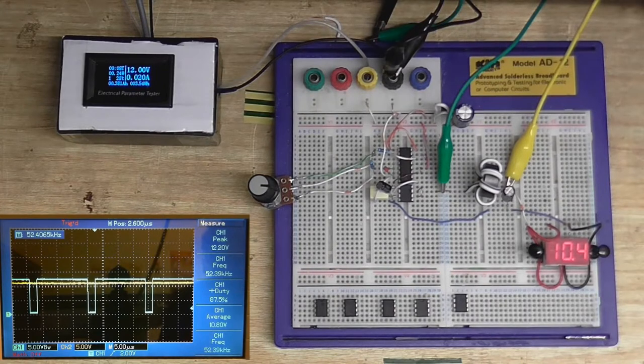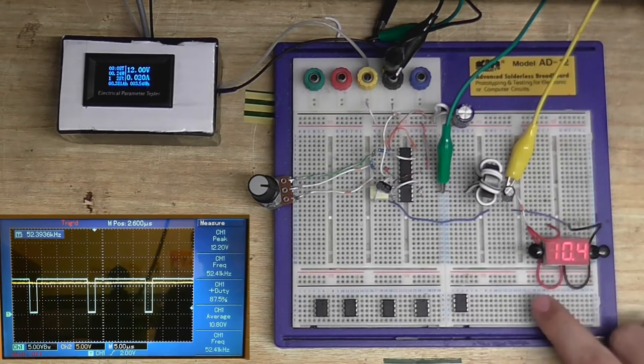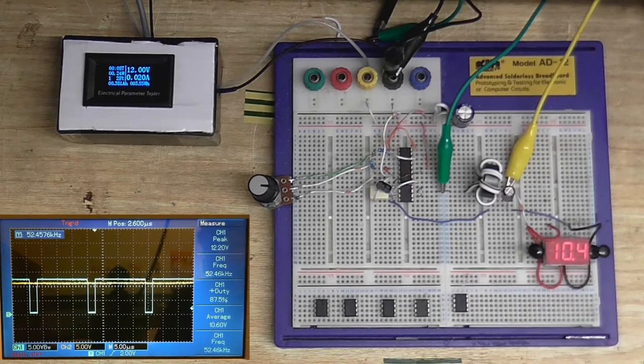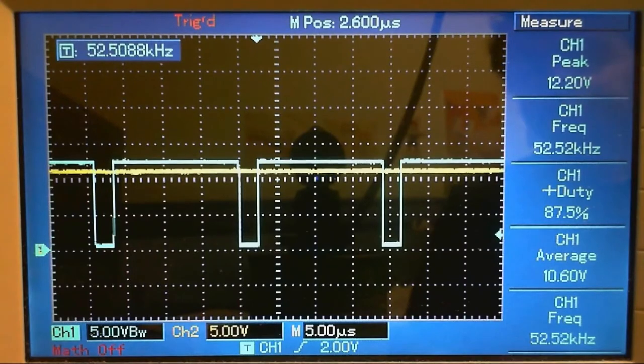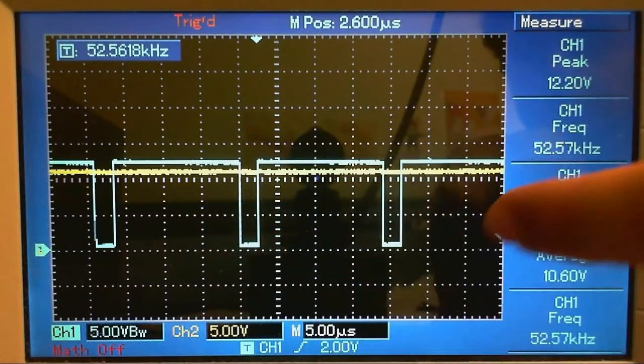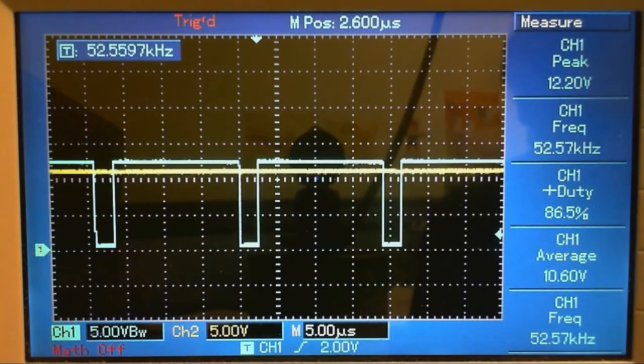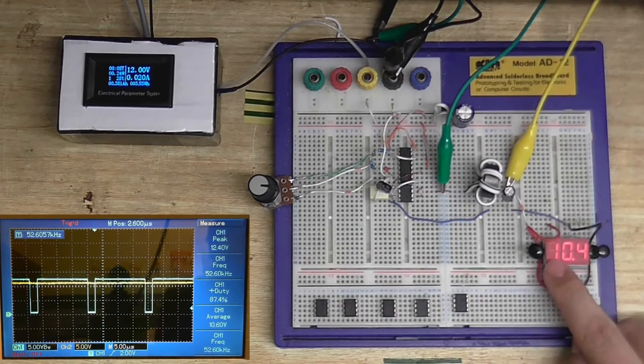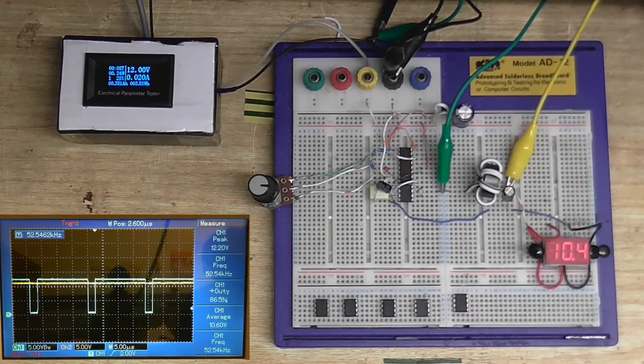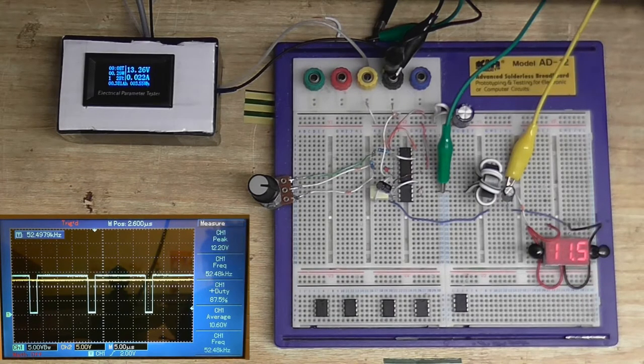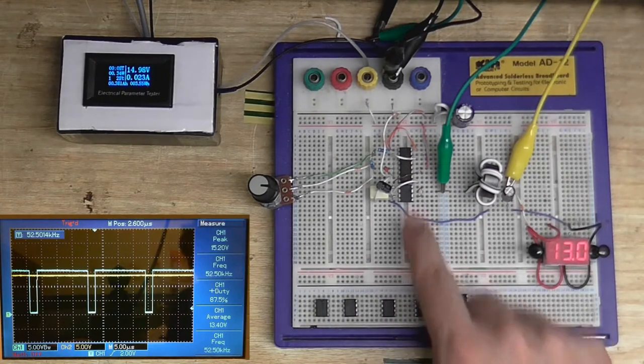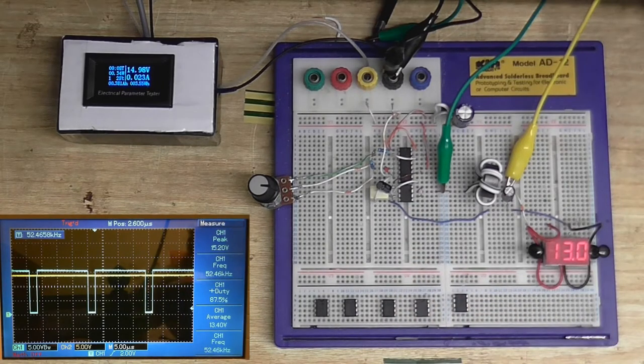Now, you might have noticed that, even though this is up all the way, we're only getting 10.4 volts out. But if you look on the scope, you can see that the duty cycle doesn't go all the way up to 100%. If it did go all the way up to 100%, we would get the full voltage here. So I'm going to increase the supply voltage to 15 volts. Don't want to go too far, because 16 volts or more will fry my gate driver chip, and I don't want to do that.